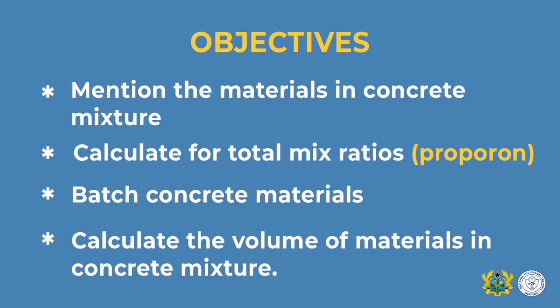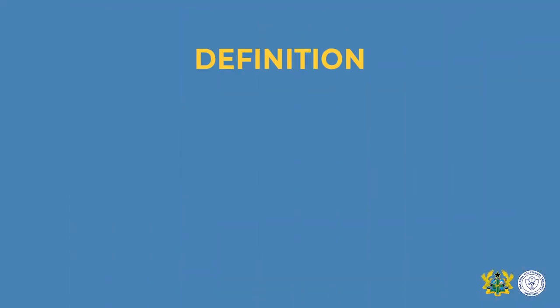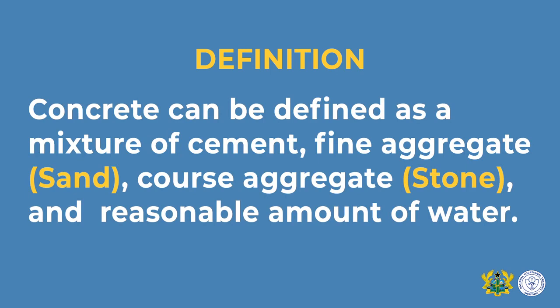I believe your trade theory teacher took you through concrete production. Before you calculate for concrete materials, first of all you must understand the definition of concrete. Concrete can be defined as a mixture of cement — that is a binder — fine aggregate, which is sand, coarse aggregate, which is stone, and a reasonable amount of water.